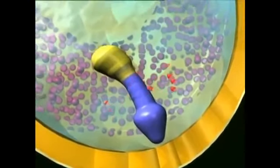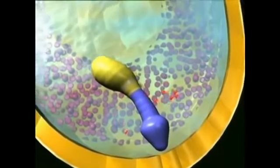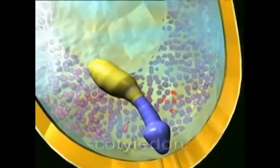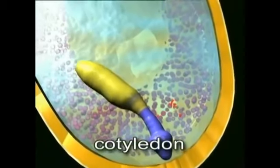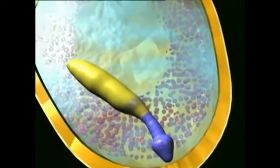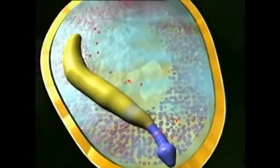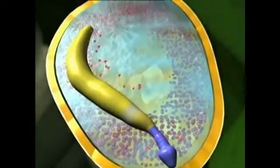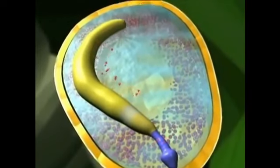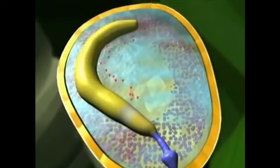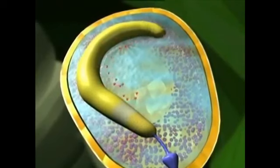In monocotyledons, a single seed leaf or cotyledon forms. As it enlarges, the embryo also receives nutrients directly from the surrounding endosperm.